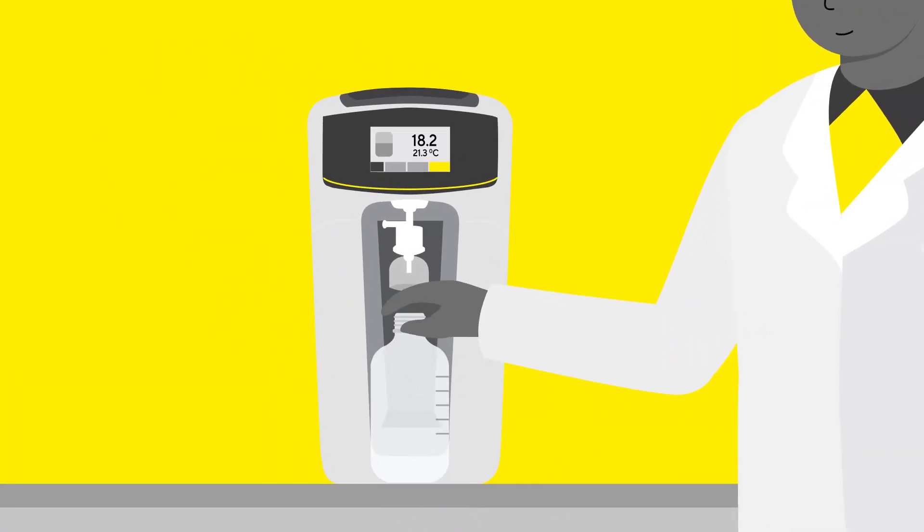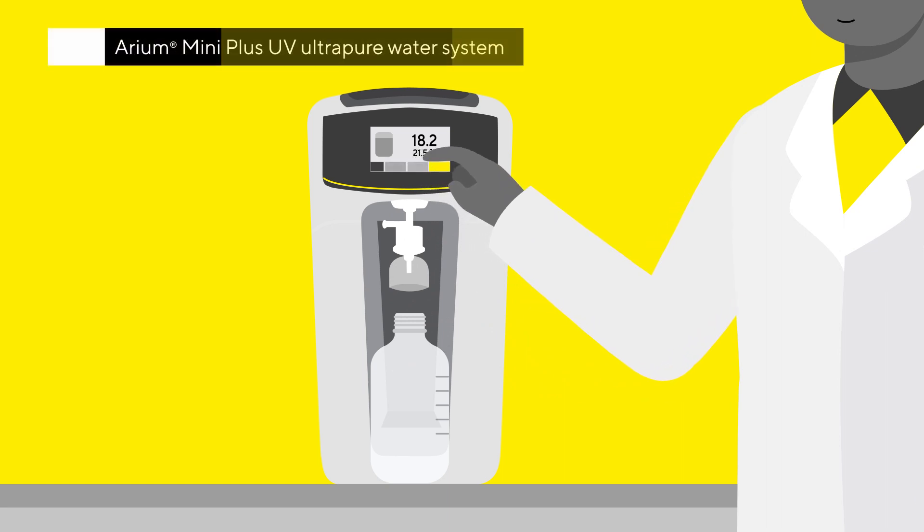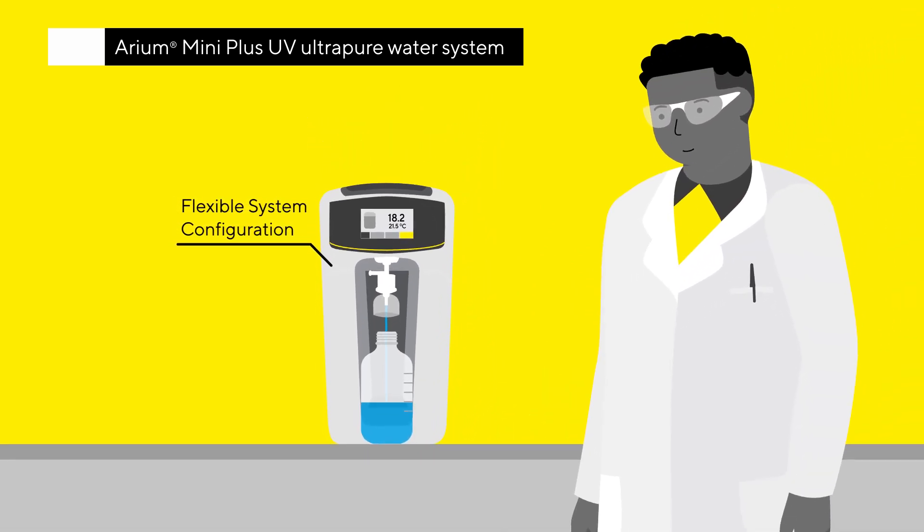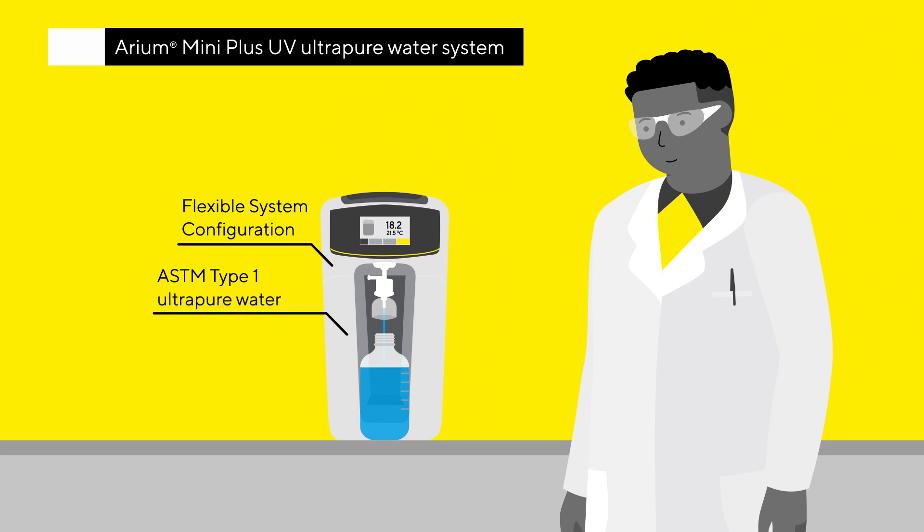Ensure your sample is treated to the highest quality buffers, solvent, mobile phase by choosing the Aerium Mini Plus UV ultra-pure water system, which can be flexibly configured and has been developed to provide ASTM type 1 water quality.